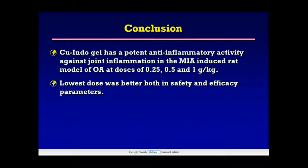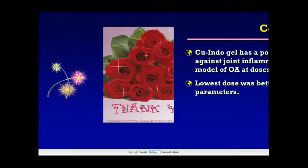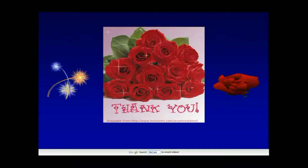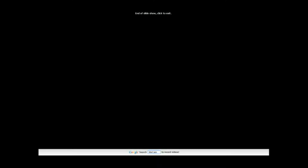In conclusion, copper indomethacin gel has potent anti-inflammatory activity against joint inflammation in the monosodium iodoacetate-induced rat model of osteoarthritis at doses of 0.25, 0.5, and 1 gram per kilogram. The lowest dose was better in both safety and efficacy parameters. Thank you very much.